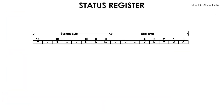Here are the details of each bit in our status register. As mentioned earlier, the status register's size is 16-bits wide. It is divided into two 8-bit portions: bits 0 to 7 are the user byte, while bits 8 to 15 is the system byte. Let us now learn the names of each bit in the status register starting from the most significant bit, bit 15.